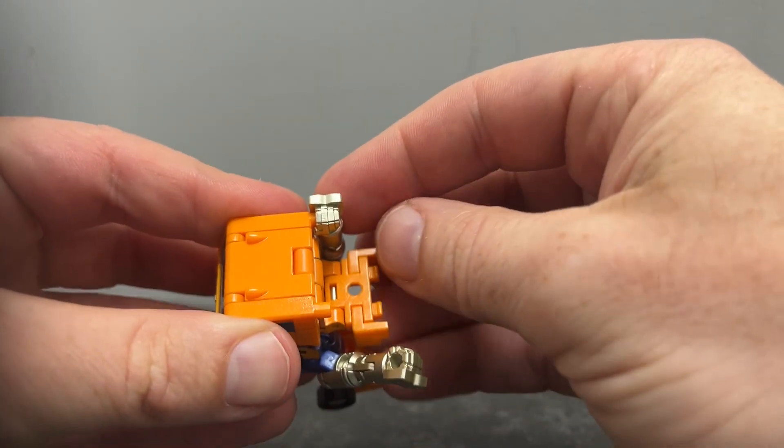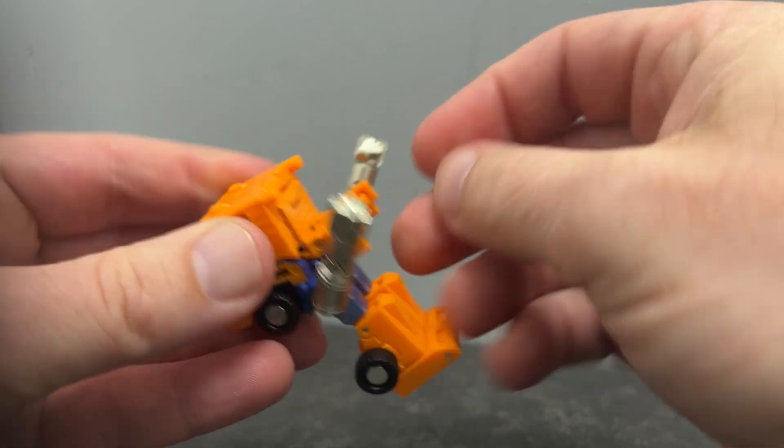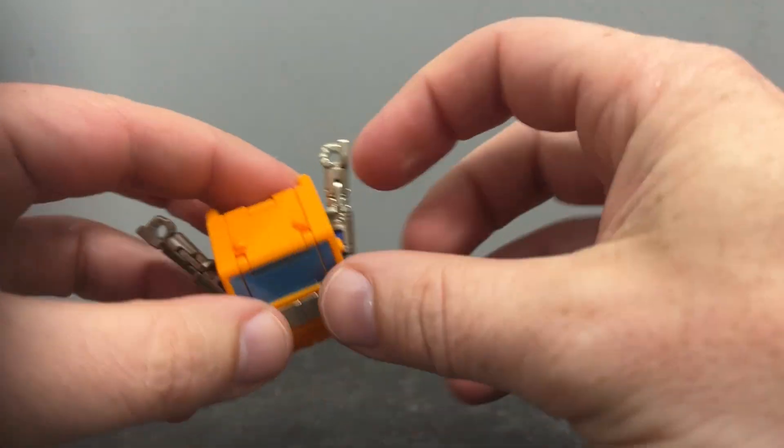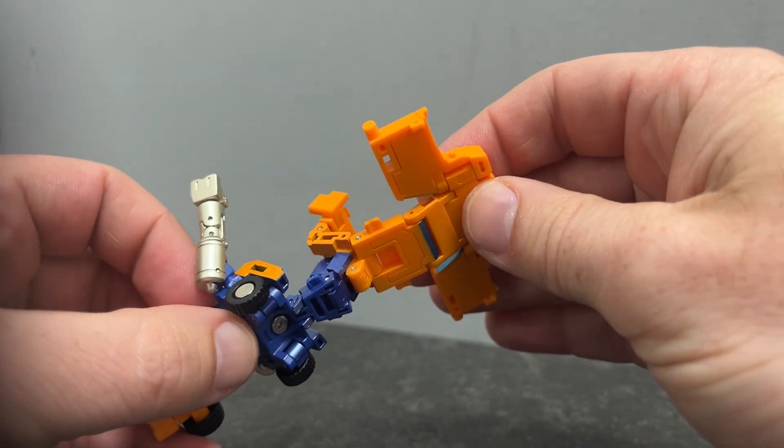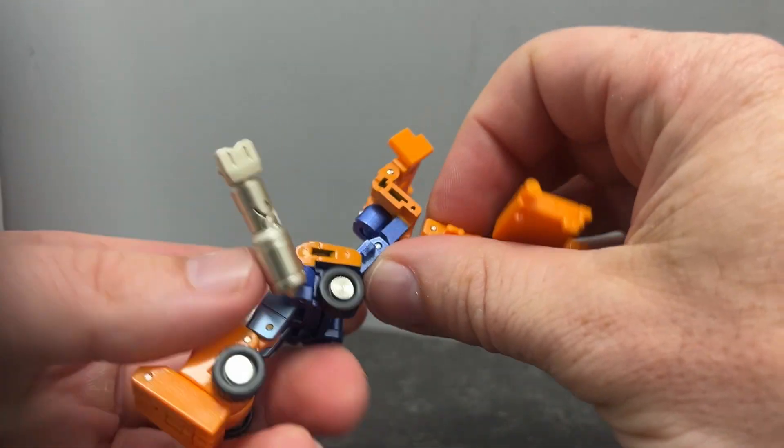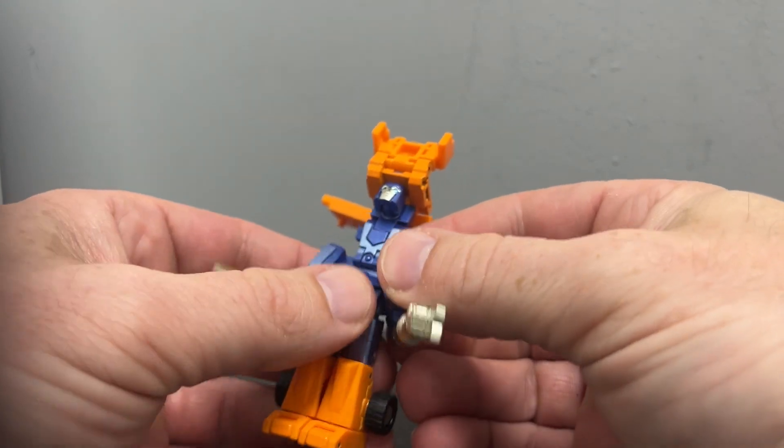Now you can take these side pieces, fold these all the way out, and then just start to fold this all the way up. You can now see that there's quite a clever and complex sort of mini skeleton going on inside here.